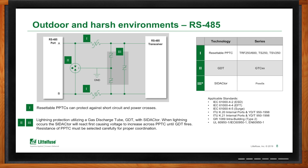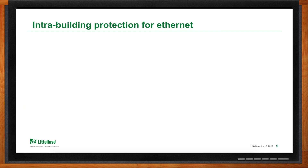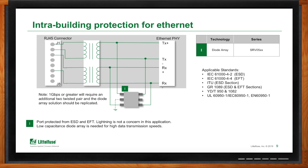For Ethernet intra-building protection, you can generally use a simple diode array such as the SRV series. This provides port protection from electrostatic discharge and electrical fast transients, and is suitable where lightning is not a concern. One advantage of this diode array is its low capacitance, which enables high transmission speeds. If you need data speeds greater than 1 gigabit per second, you'll require additional twisted pairs beyond the example shown.